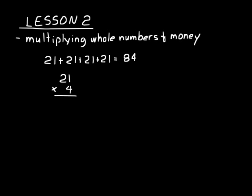Twenty-one times four. When you multiply twenty-one times four, you multiply the four by one, then you multiply the four by the two, and that would be an eight, and you get eighty-four for an answer — just like you should get the same number as when you added twenty-one four times. Otherwise you did something incorrectly.